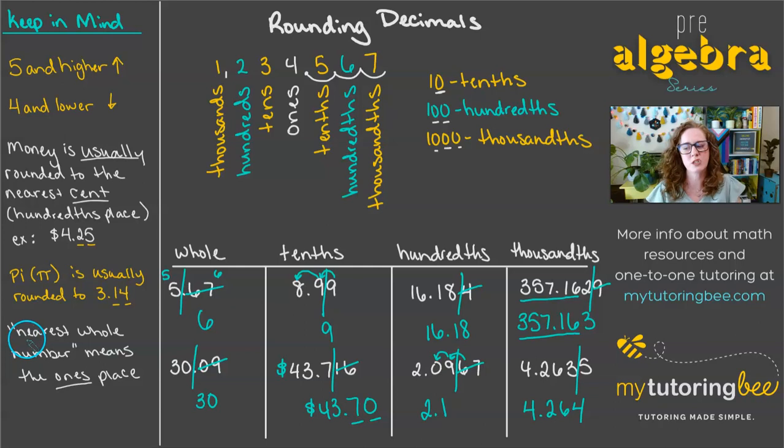If the question says round to the nearest whole number, then that is referring to the ones place. So anytime you see whole number, whole percent, whole dollar, you're rounding to the nearest ones place.